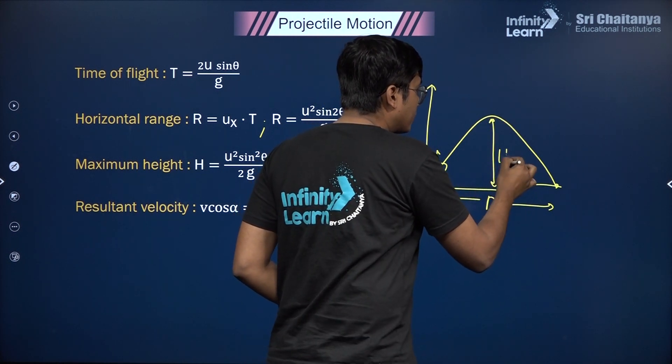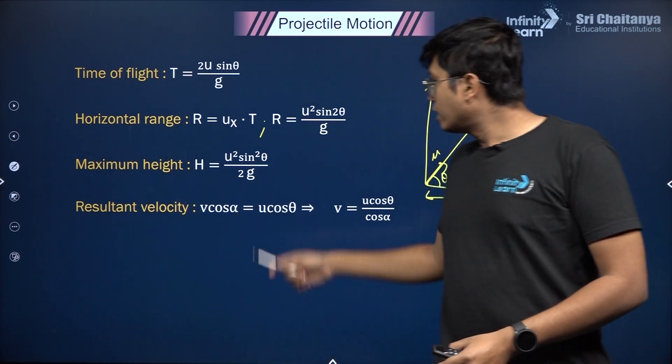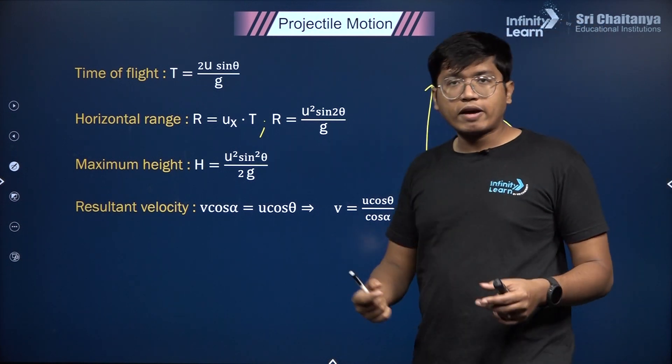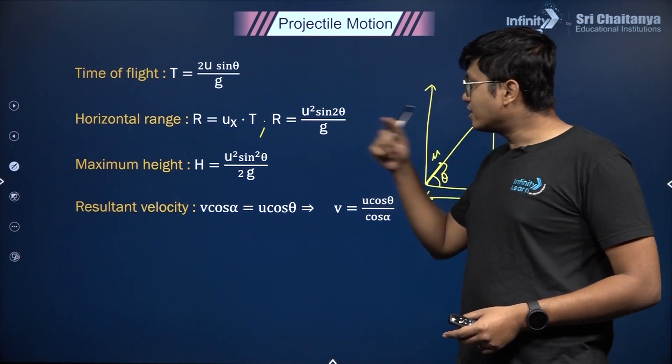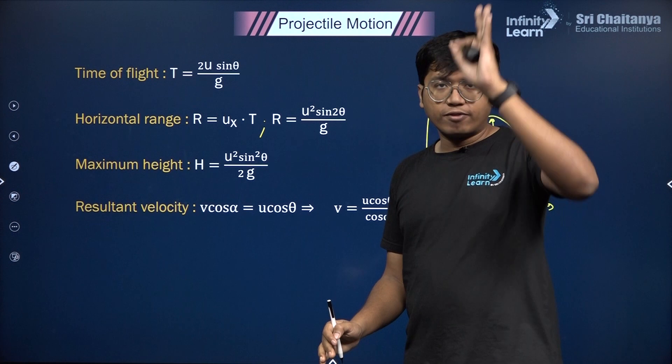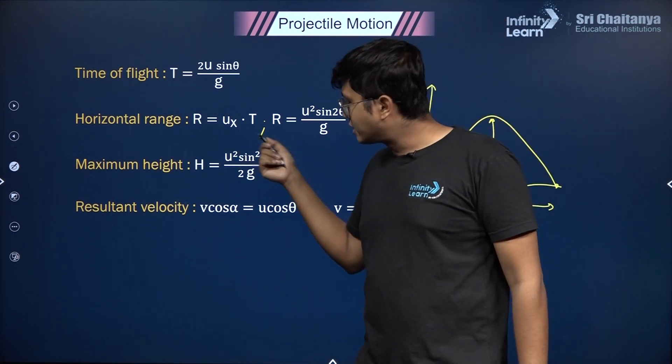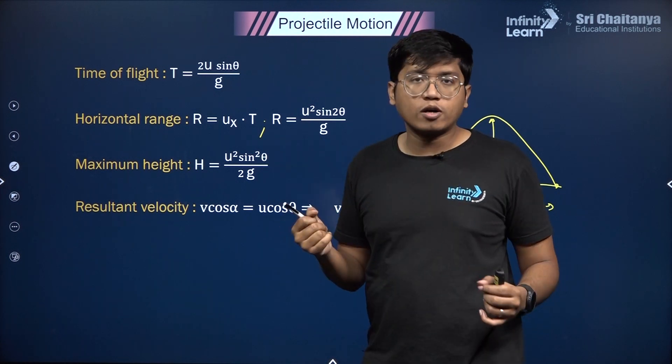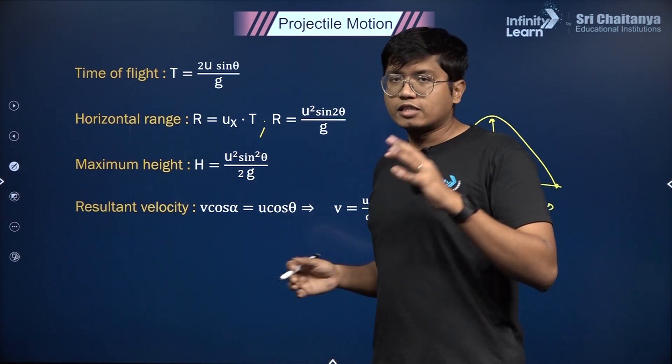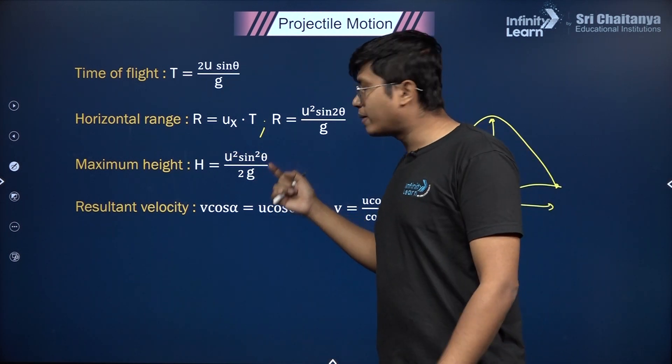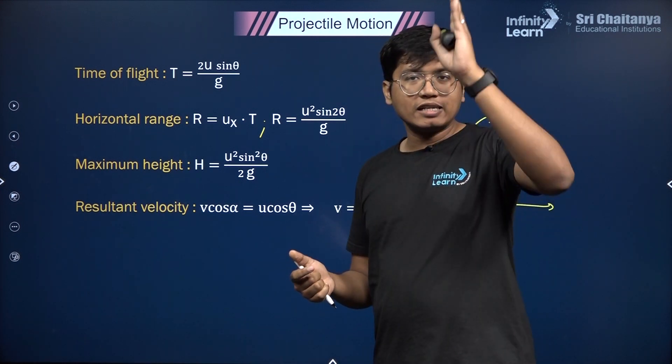The maximum height is given by H = u² sin² θ / 2g. Again, this depends only on the vertical component of the velocity because it's u sin θ whole squared. As we learn about kinematic variables, this depends directly on the single dimensional motion.